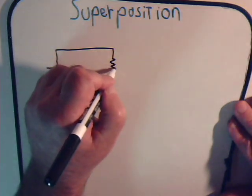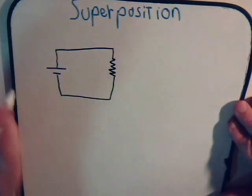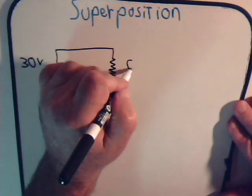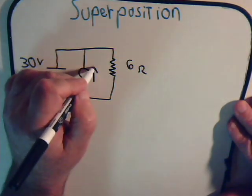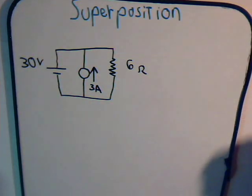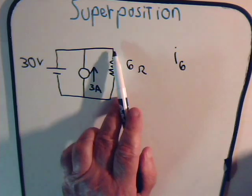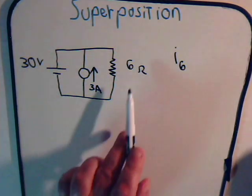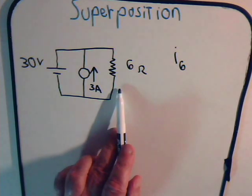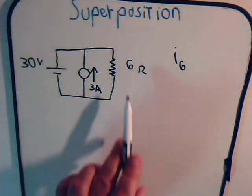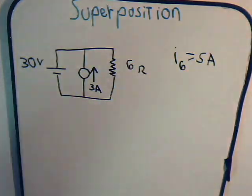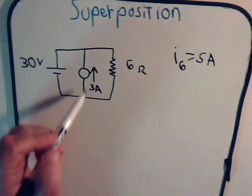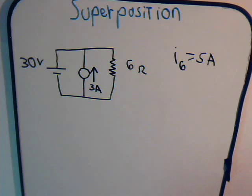For example, suppose we have a 30-volt source with a 6-ohm resistor, and a current source of 3 amps. We want to know what is the current through the 6-ohm resistor. Looking at this, the current source is in parallel with the voltage source, so the voltage drop across the resistor has to be 30 volts regardless of the current source. That means the current must be 5 amps. The current source is totally irrelevant to determining the current through that resistor.